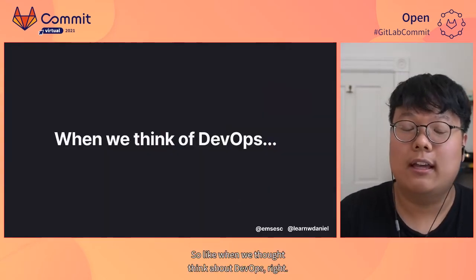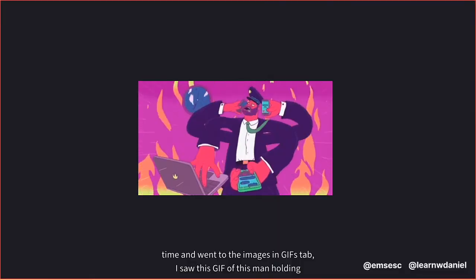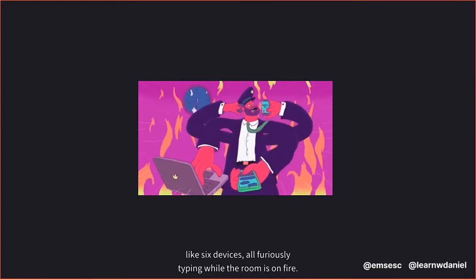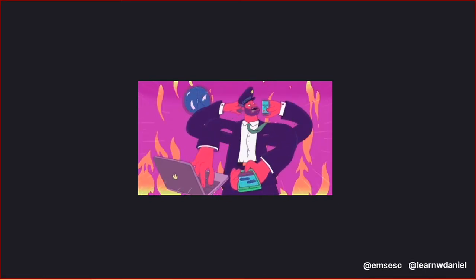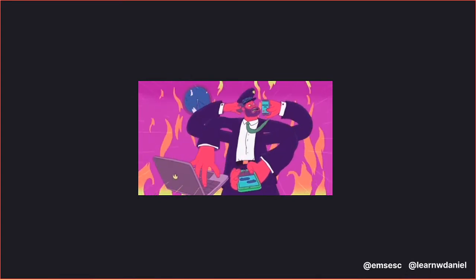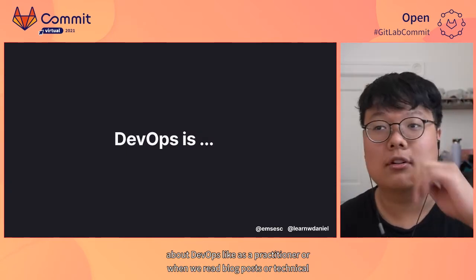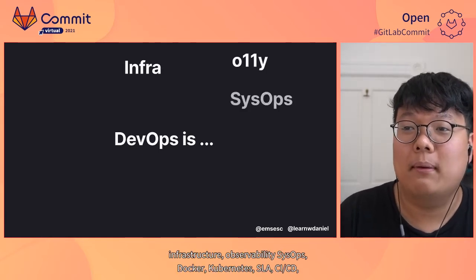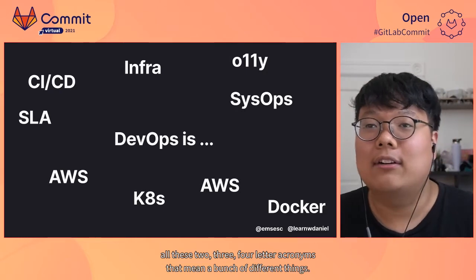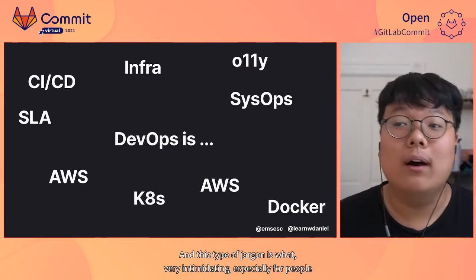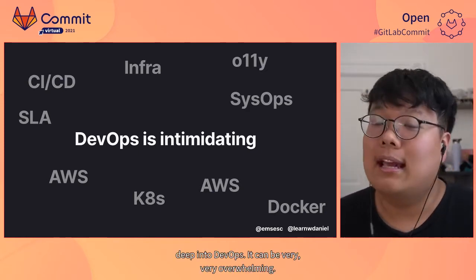So when we think about DevOps, we think about a lot of things. But when I Googled DevOps for the first time and went to the images and GIFs tab, I saw this GIF of a man holding like six devices, all furiously typing while the room is on fire. Especially when you're learning about DevOps for the first time, seeing an image like this doesn't make it the most appealing to get into — it seems very intense and overwhelming. And it is. When we read blog posts or technical documentation about DevOps, we hear words like infrastructure, observability, sysops, Docker, AWS, Kubernetes, SLA, CICD — all these two, three, four letter acronyms that mean a bunch of different things. This type of jargon is very intimidating, especially for students or practitioners who are not deep into DevOps. It can be very, very overwhelming.